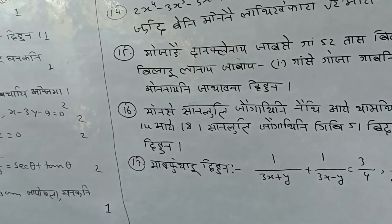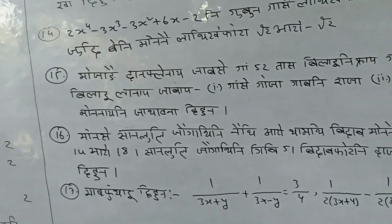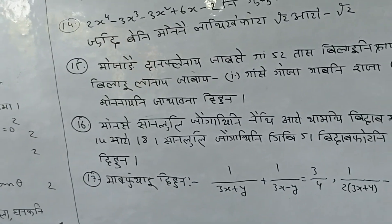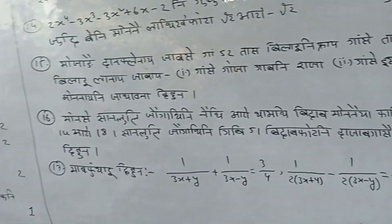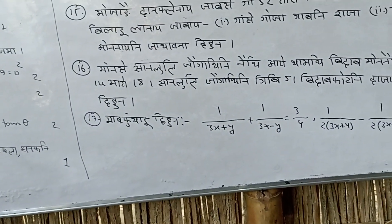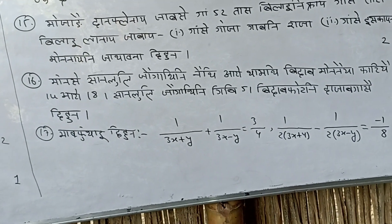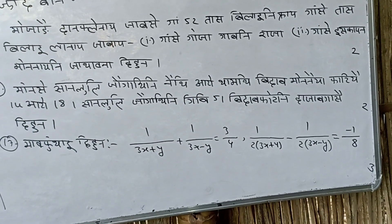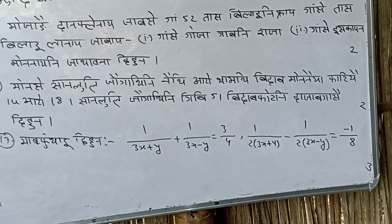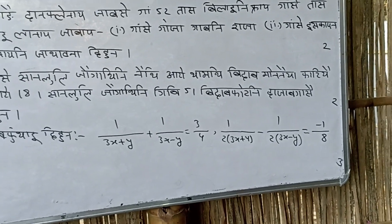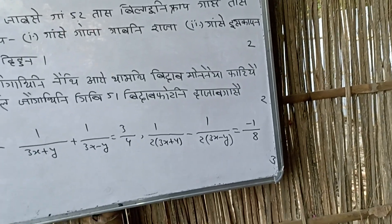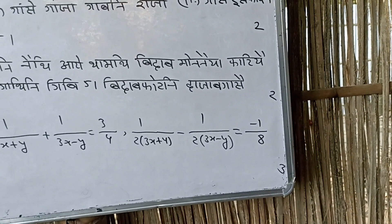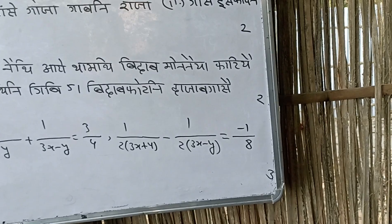Number 16: Given information about a container with certain dimensions and capacity, find the required measurements. Number 17: Solve the simultaneous equations — 1 divided by (3x plus y) plus 1 divided by (3x minus y) equals 3 over 4; and 1 divided by (3x plus y) minus 1 divided by (3x minus y) equals negative 1 over 8.